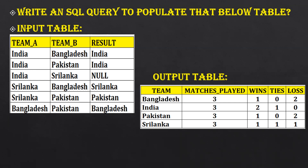Each team is playing three times. You can see how many matches India won — two. How many Sri Lanka won — one match. Pakistan also one. Bangladesh also once. But what about the null values? Null means the match is a tie. So we can say the India vs Sri Lanka match is tied. If Bangladesh won only once and there are no tie matches, then they are going to lose two matches. Pakistan and Sri Lanka also lost one each — they won one, had one tie, and lost one.